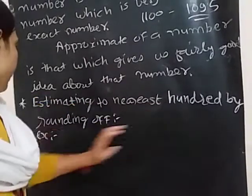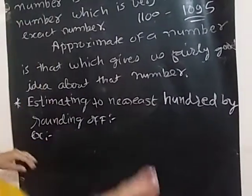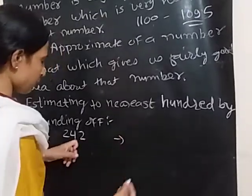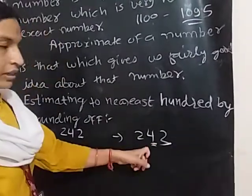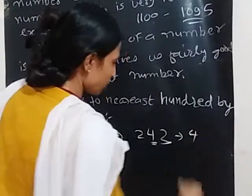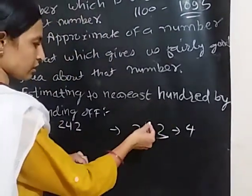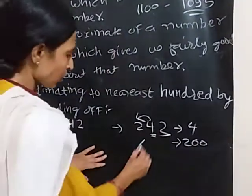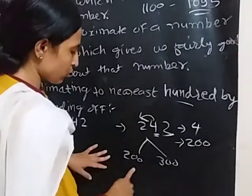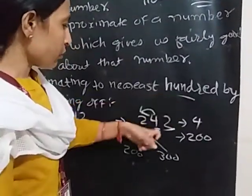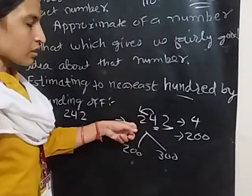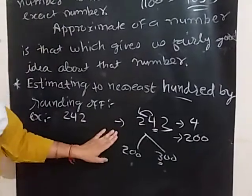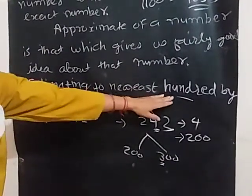Next, estimating to the nearest hundred by rounding off. We take the same example, 242. Here we look at the tens place, which is 4. Since 4 is less than 5, we go to the previous 100. The number 242 lies between 200 and 300, so we round it to 200. If the tens place is 5 or greater, we go to the next 100.